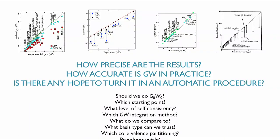That was basically prompting the question: how precise are all these results? Precise means the numerical precision of your calculation — all the numerical approximations you make, finite sizes of grids, finite sizes of integration grids, k-points. Then there's the question of self-consistency: G0W0, which starting point, which level of self-consistency, what kind of GW integration method? What to compare to, which basis sets — plane waves, local orbitals — do we get the same? What's better? What core-valence partition? What kind of pseudopotentials? The list just goes on. Maybe we don't care — we just tune our parameters until we hit the experimental value and say 'good result.' Or maybe it's just a very hard problem.